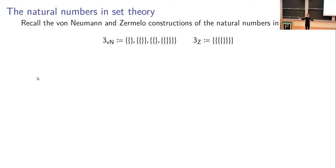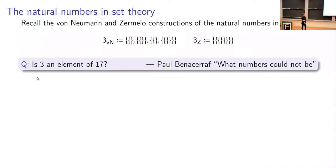For Zermelo, by contrast, three is a singleton set containing the set containing the set containing the empty set. And the natural numbers is the set of all of these sets. This leads to a natural question: is three an element of 17? On the one hand this is nonsense, but on the other hand it's a totally legitimate question in the language of set theory, since three is a set and 17 is a set and it makes sense for one set to be an element of another. And it has a different answer depending on how you define three and 17 — for von Neumann the answer is yes, for Zermelo the answer is no.